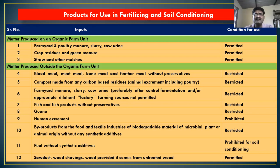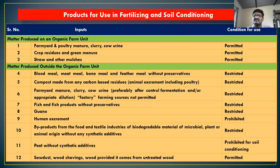Then compost made from any carbon-based residues, animals, pixels, including poultry — it is restricted to farmyard manures, slurries, cow urine, and also controlled fermentations or appropriate dilutions. Such sources should be fermented. Fish products without preservatives are restricted. Guano is restricted. Human excreta are completely prohibited.